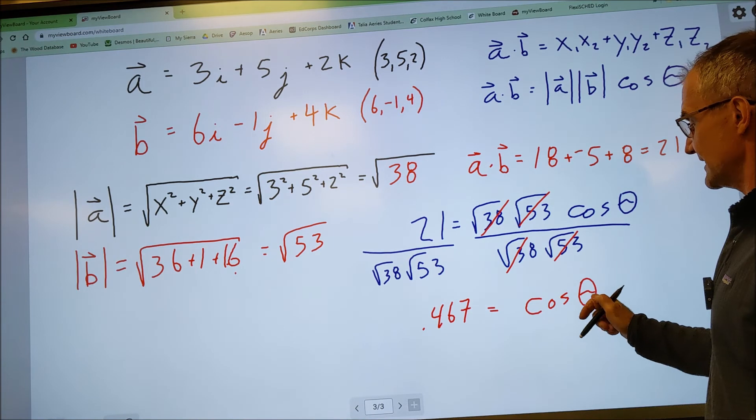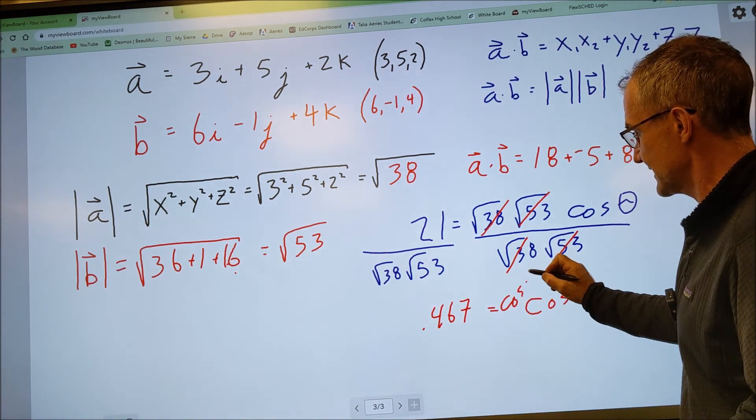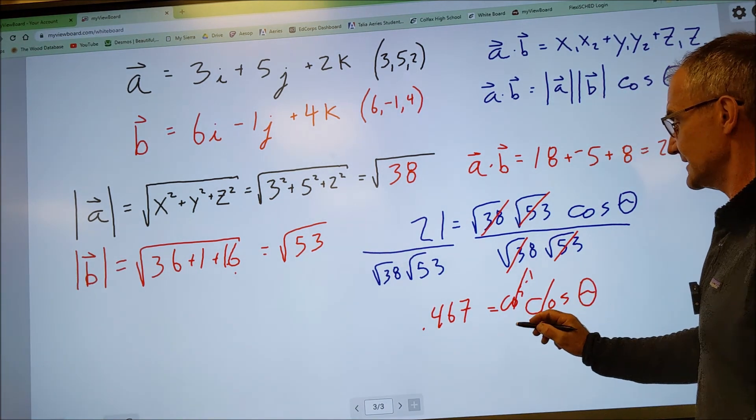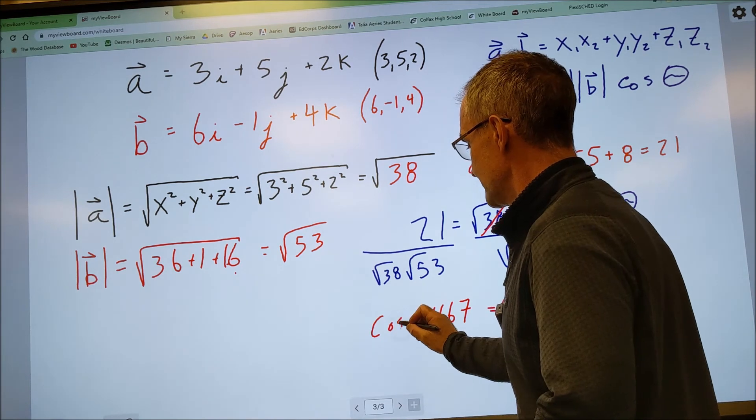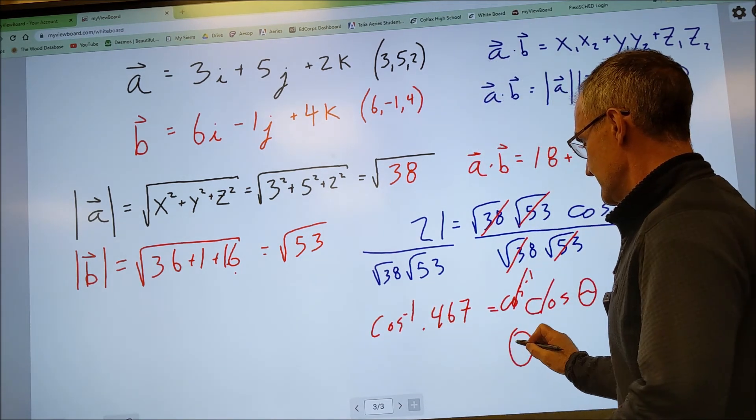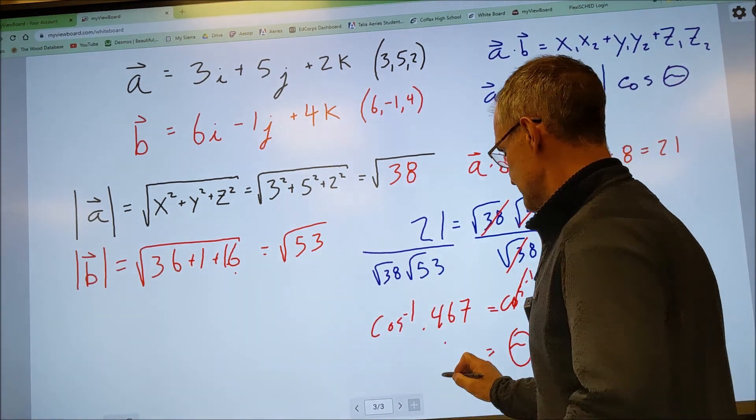Again, solving for theta, I take the arc cosine of both sides. That'll cancel with that. The arc cosine of that number right there, theta is going to be equal to 62 degrees.